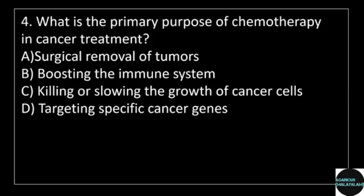Fourth question: what is the primary purpose of chemotherapy in cancer treatment? Answer options: option A, Surgical removal of tumors; option B, Boosting the immune system; option C, Killing or slowing the growth of cancer cells; option D, Targeting specific cancer genes.